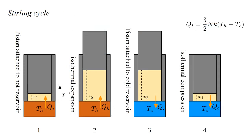To gain more insight into reversibility, let's perform a similar analysis for the Stirling cycle. Like the Carnot cycle, the Stirling cycle employs isothermal expansion at high temperature, converting heat Q-hot extracted from the hot reservoir into work, and isothermal compression at low temperature, converting work into heat Q-cold transferred to a cold reservoir.